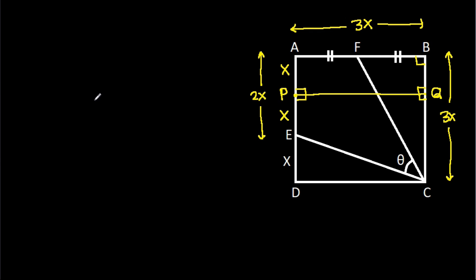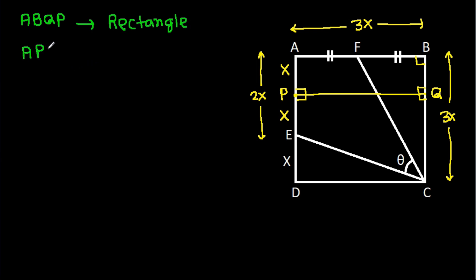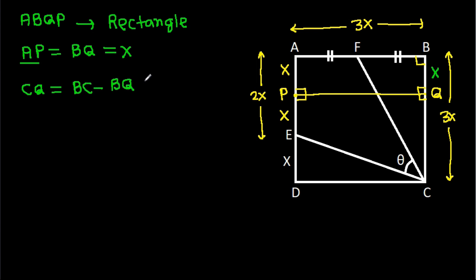Now ABQP will be a rectangle, which means AP equals BQ, and since AP is x, BQ equals x. And CQ equals BC minus BQ, which is 3x minus x, giving CQ equals 2x. Also AF equals BF equals AB over 2 equals 3x over 2, so AF is 3x over 2 and BF is 3x over 2.